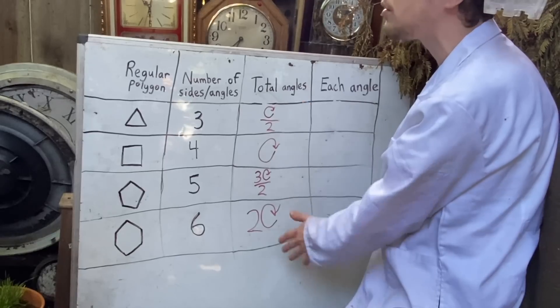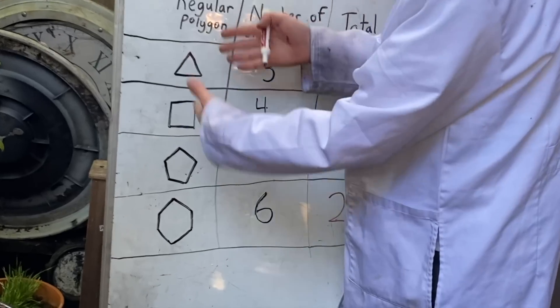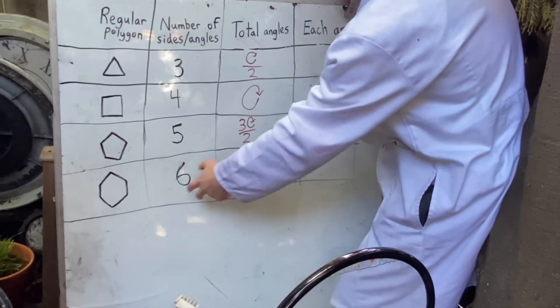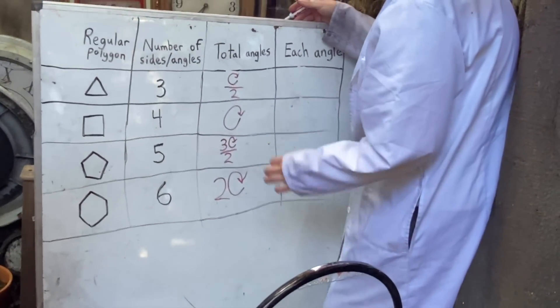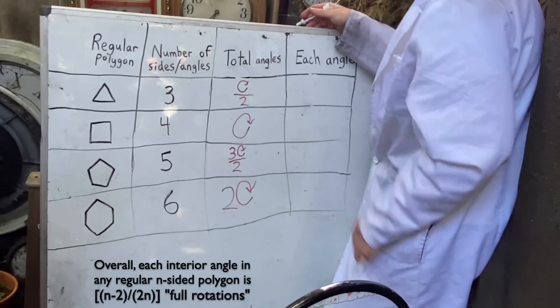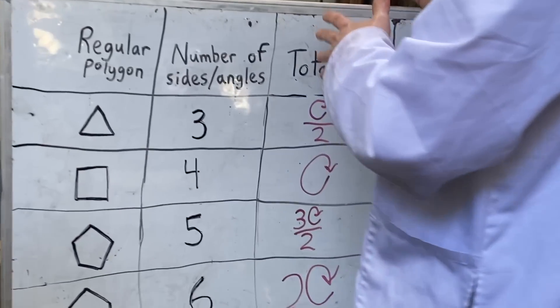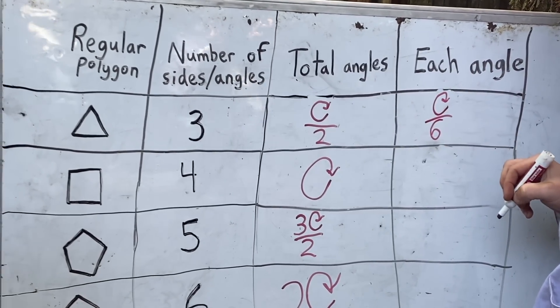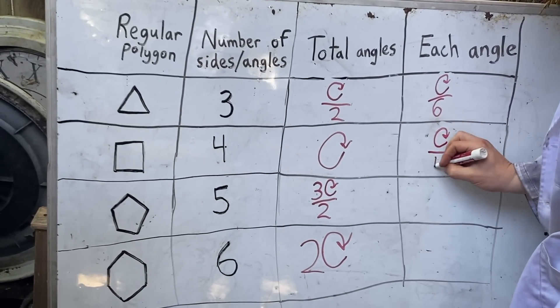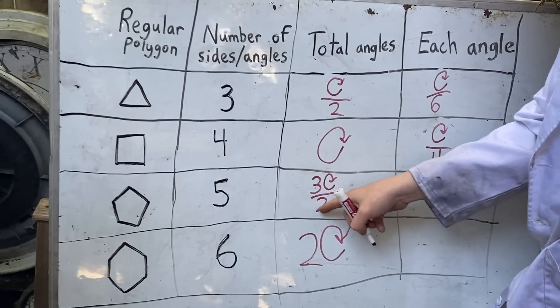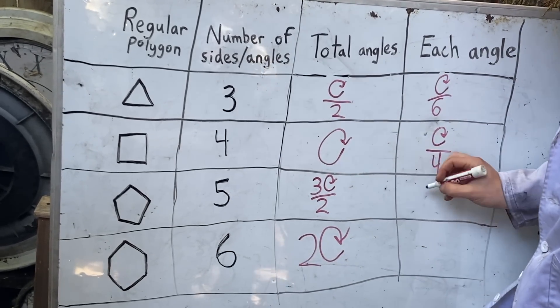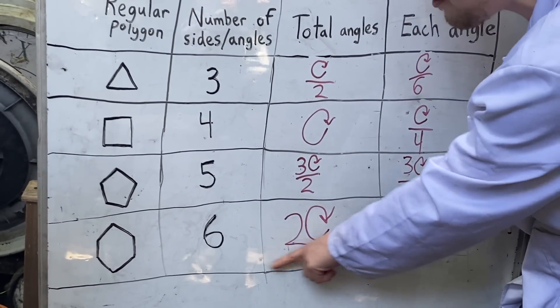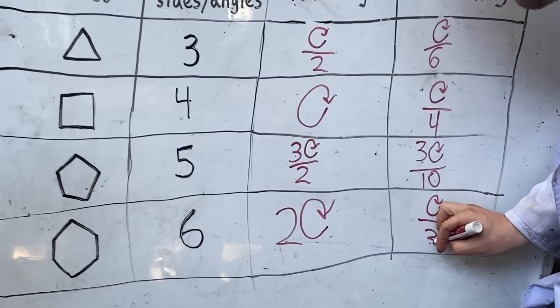Now, that amount of total angles will be true for these polygons, whether or not they're regular. But if they are regular, we can additionally take this, divide it by how many sides slash angles that polygon had, and then know what any individual angle's measurement was. For example, with the equilateral triangle, half a spin divided by three angles makes each angle be a sixth of a full spin. And with the square, it works out to a quarter of a full spin. Here it works out a little messier. Dividing by those five different angles gives us three tenths of a full spin. But on the hexagon, it gets a little neater again, where that divides to a third of a full spin when we simplify it.